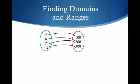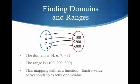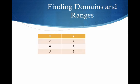What about here? Our domain is 4, 6, 7, and negative 3. Our range is 100, 200, and 300. Is this a function? Yes, it is, because every x goes to exactly one y. Again, it does not matter that 200 is repeated.